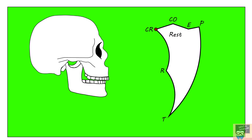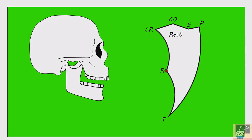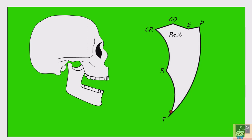When you open the mandible, the first movement is rotational, which is about 20–25 mm and is represented by R on the diagram. From here, when you further open your jaw, the movement is translational, which is about 25–35 mm. So the total mandibular depression or total mandibular opening would be 50–60 mm.